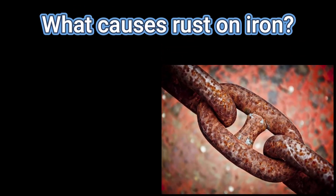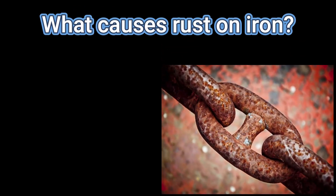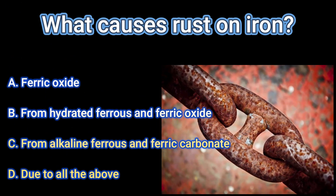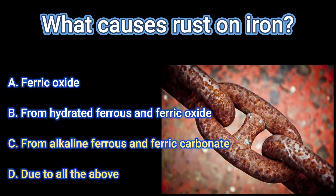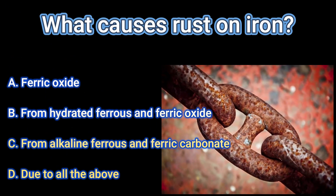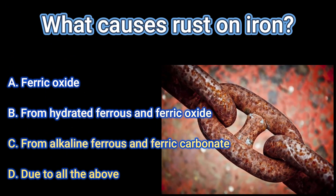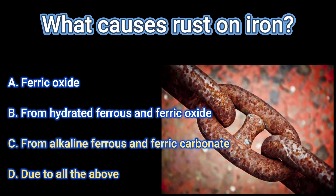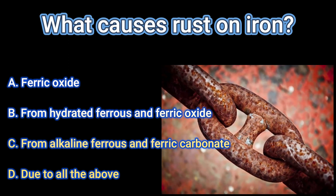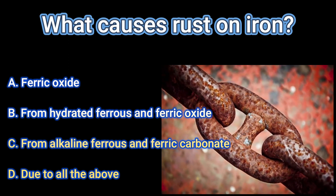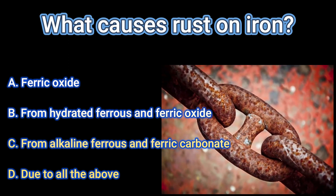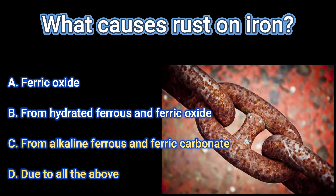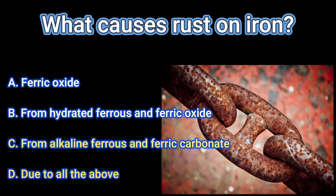Your next question is: what causes rust on iron? These are your options. A. Ferric oxide, B. From hydrated ferrous and ferric oxide, C. From alkaline ferrous and ferric carbonate, D. Due to all the above.